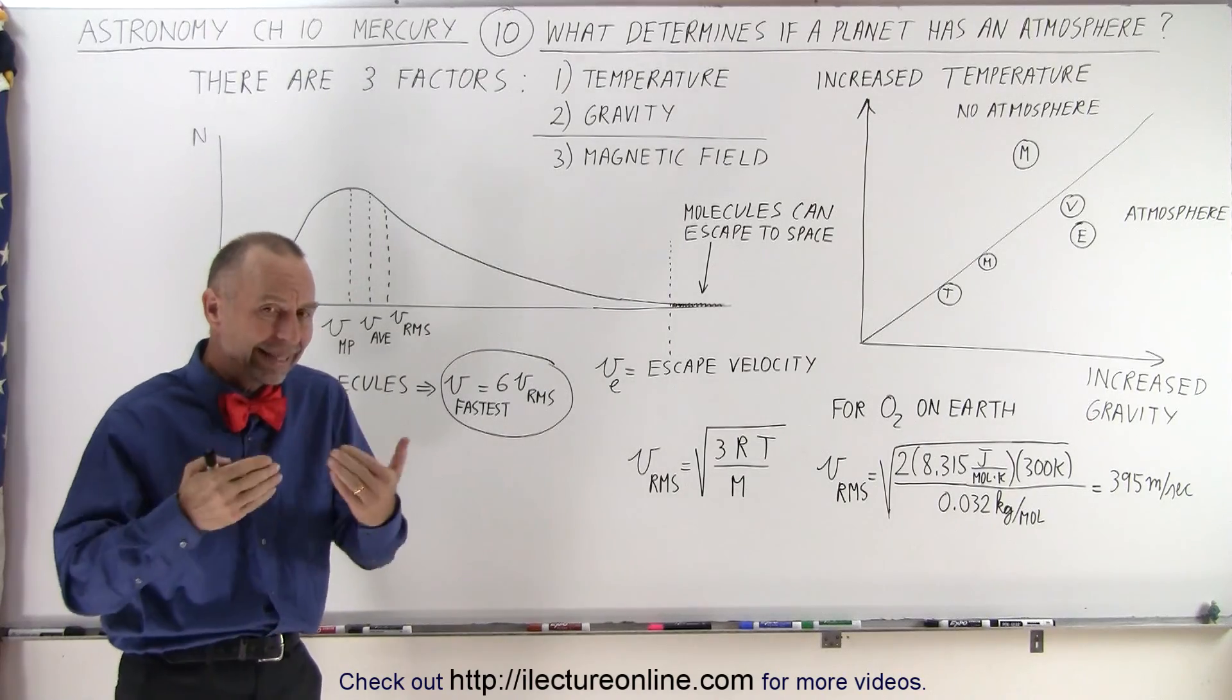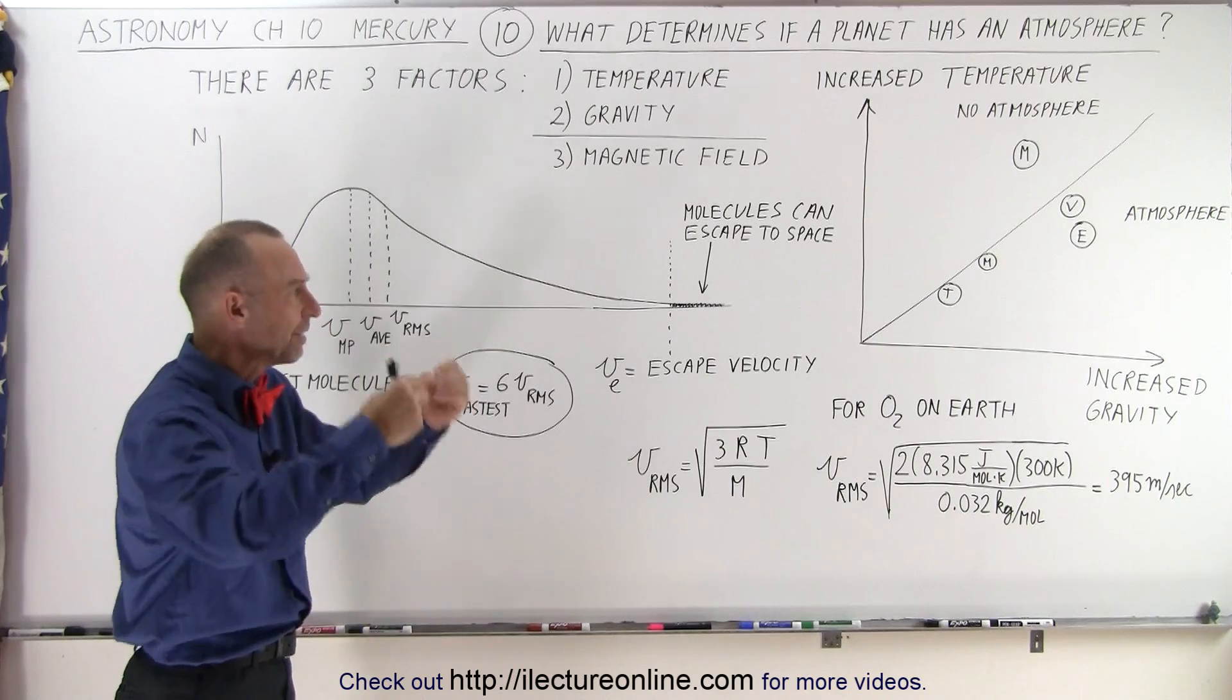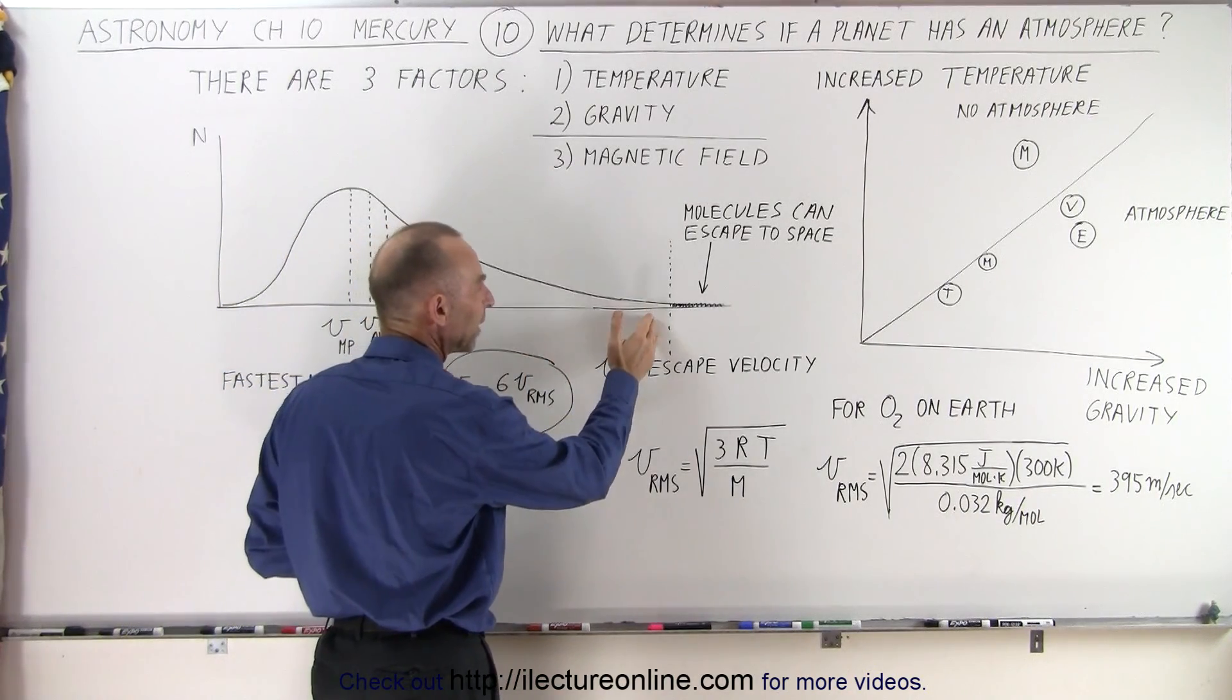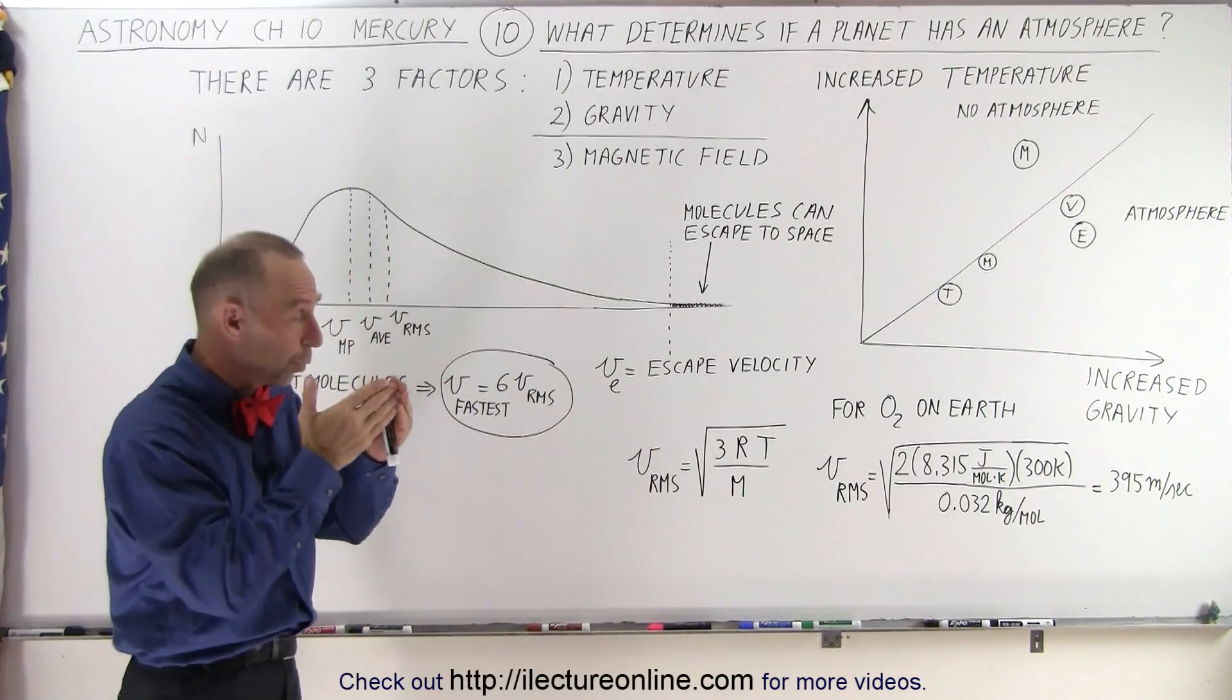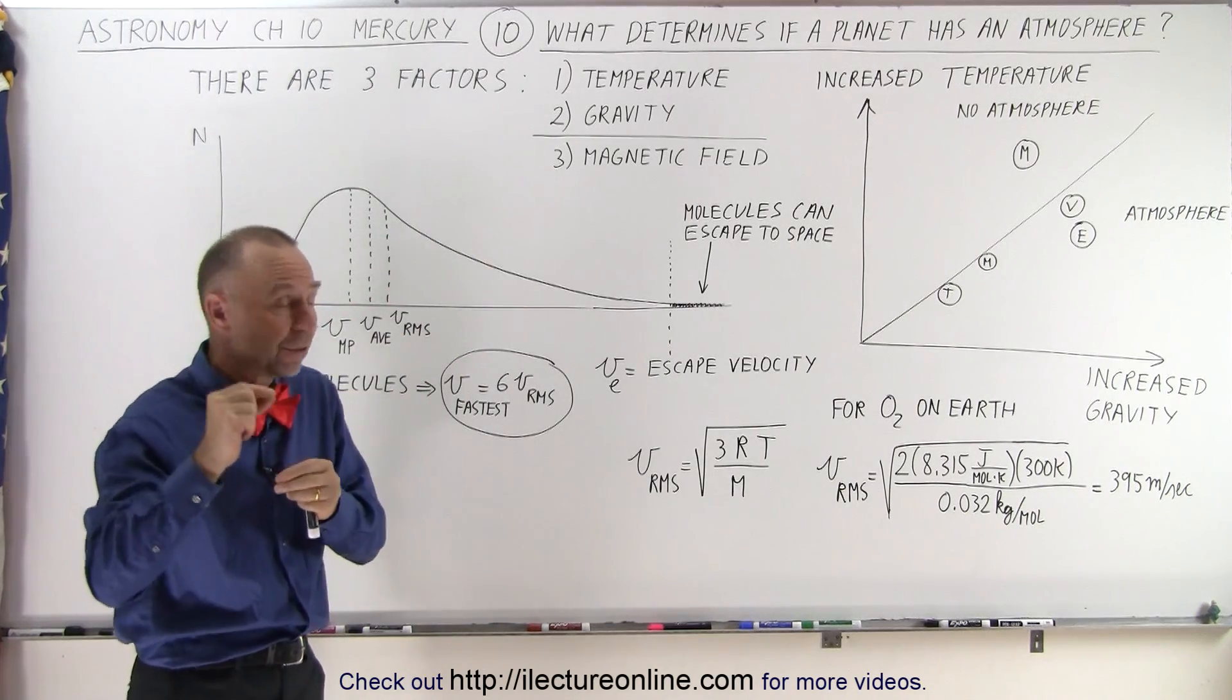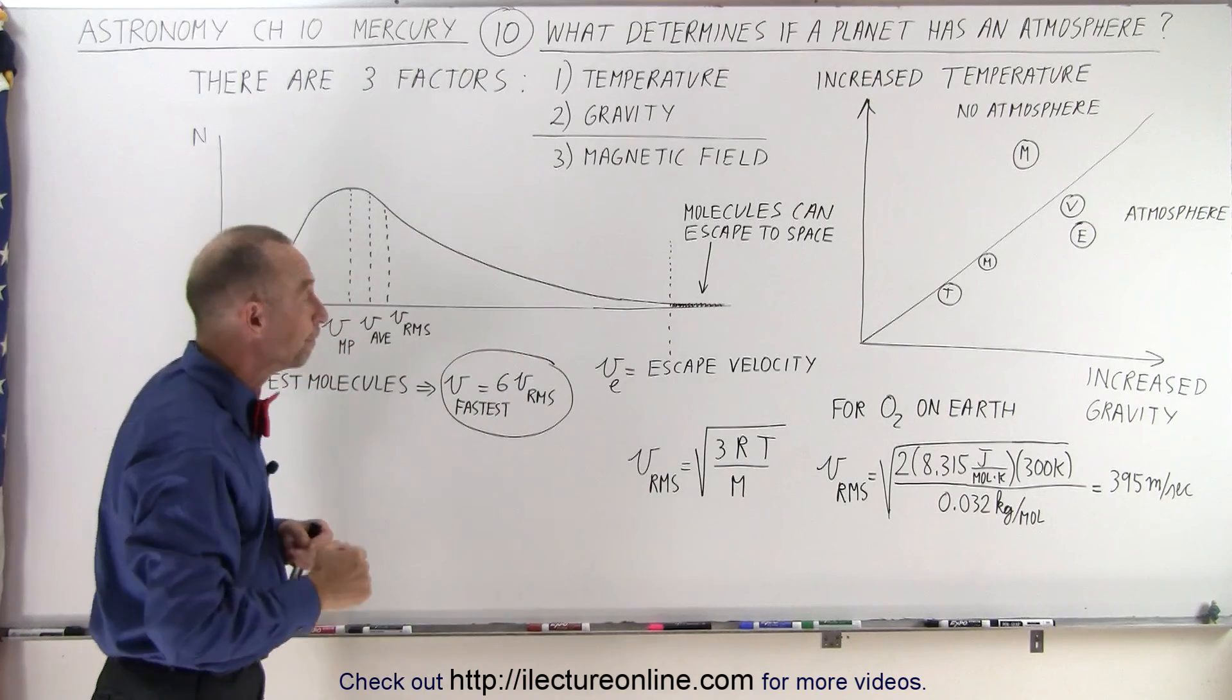Now, what dictates that a molecule will actually leave the atmosphere and leave the planet? Well, if a molecule moves at a speed greater than the escape speed, and it doesn't bump into any other molecules to slow down or to stop it, and it's able to get off into space, if it has a velocity greater than the escape speed, it will indeed leave the planet.